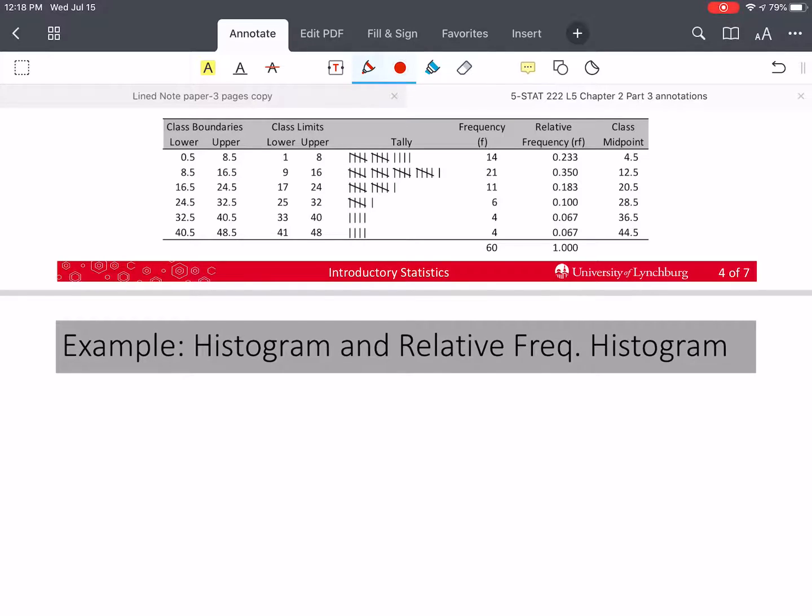So to do this, I'm first going to give it a title. So histogram of commuting distance one way for Dallas, Texas, let's say. Now I need two axes, so a vertical and a horizontal.